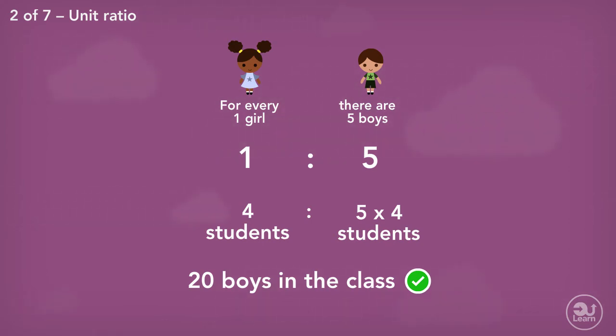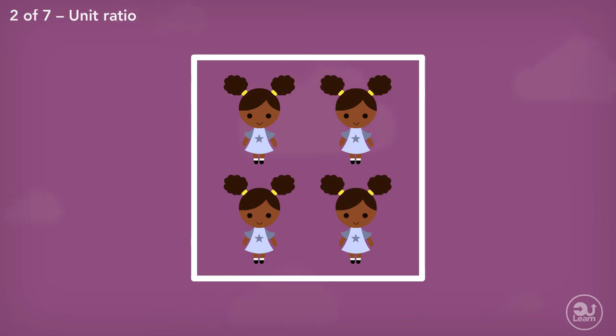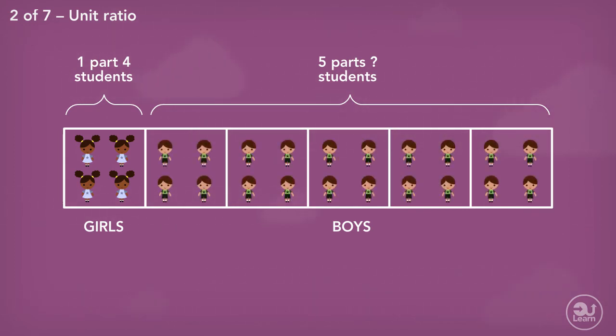Another way of thinking about it is as follows. We are told there are four girls in the class. Therefore, one part of the ratio represents four students. If each part represents four students and we know there are five parts representing the number of boys, there must be five lots of four boys. This must mean there are twenty boys in the class.